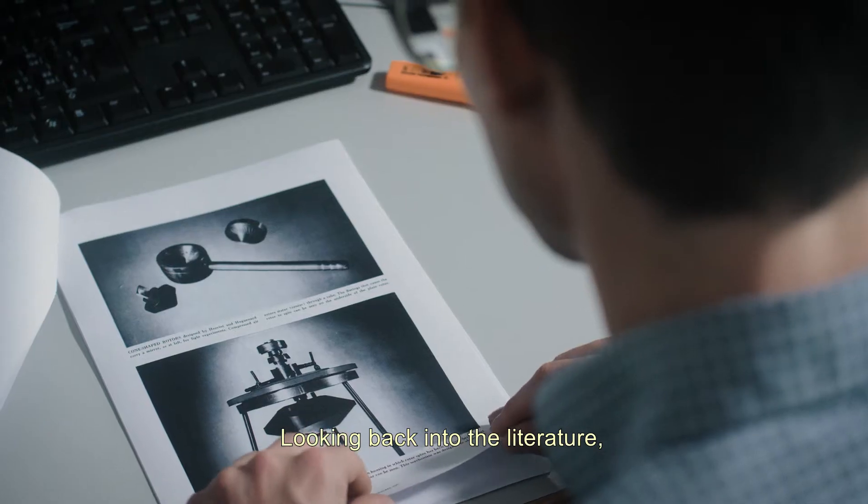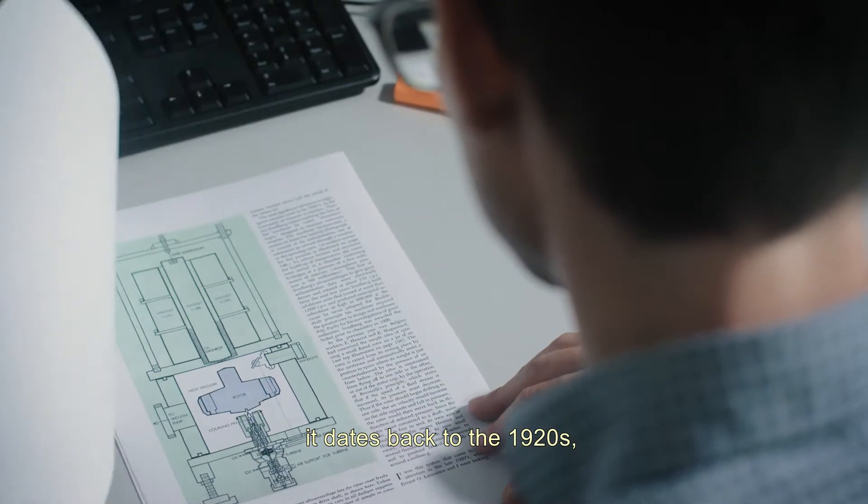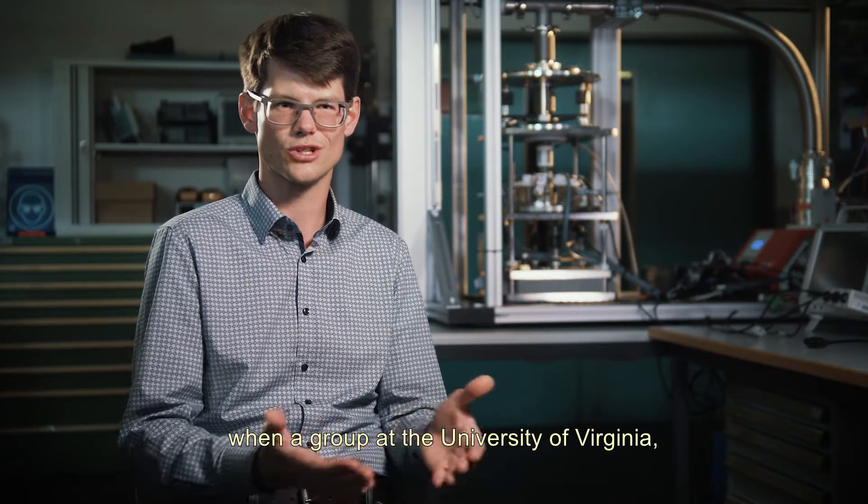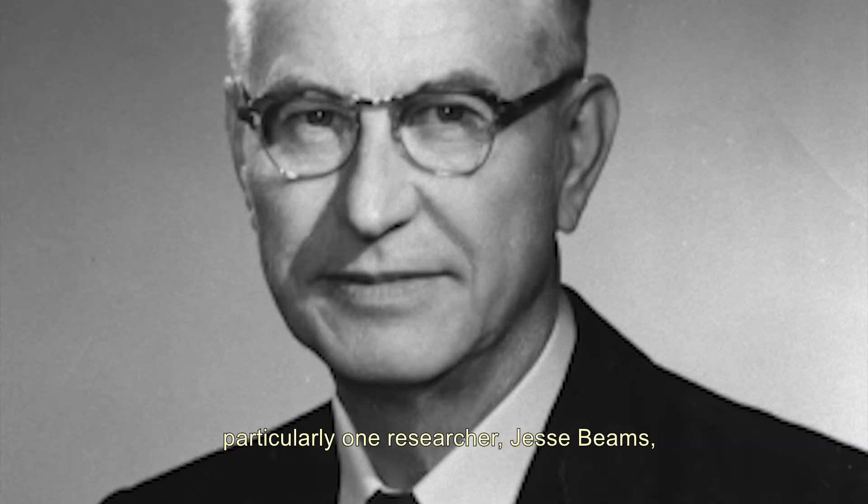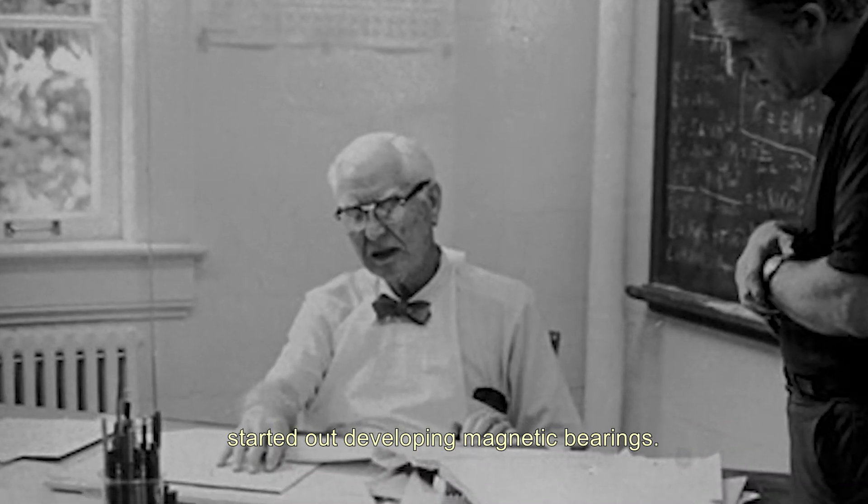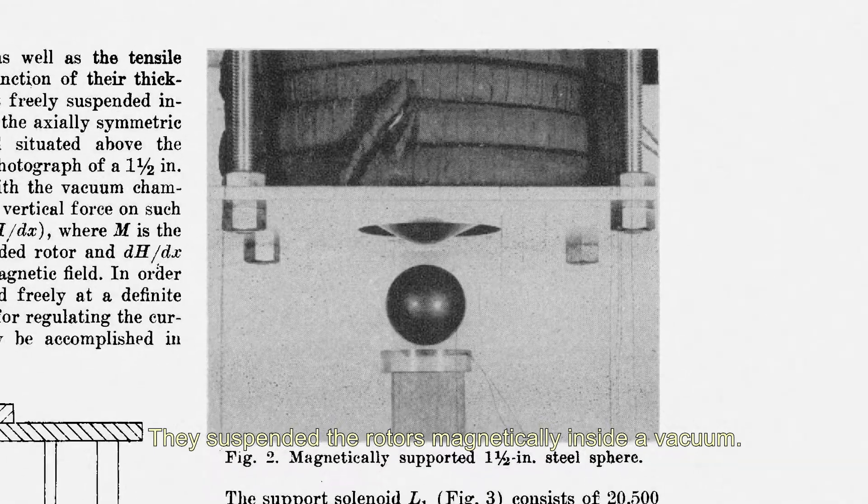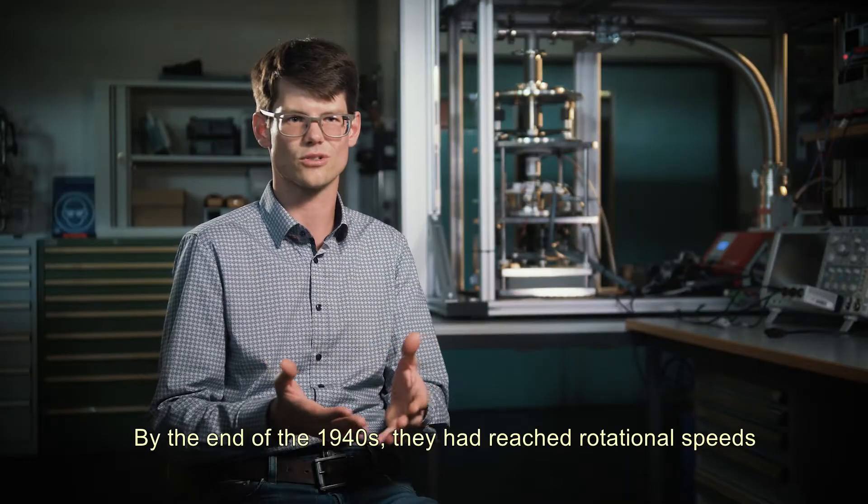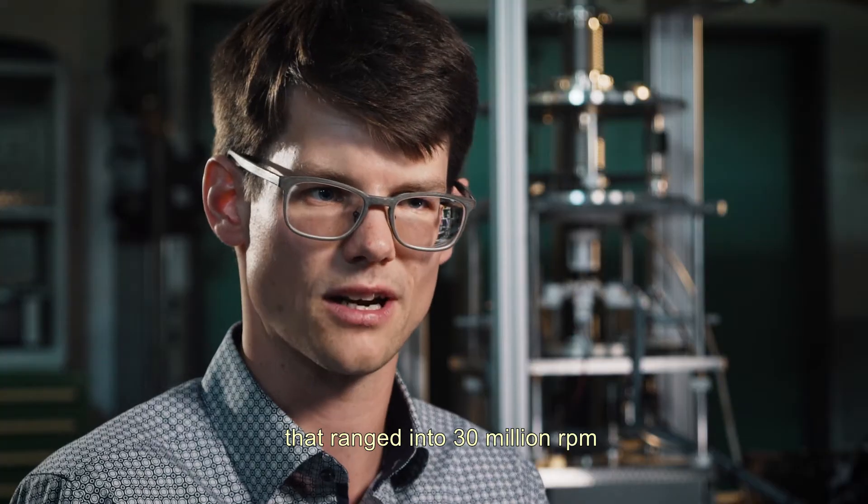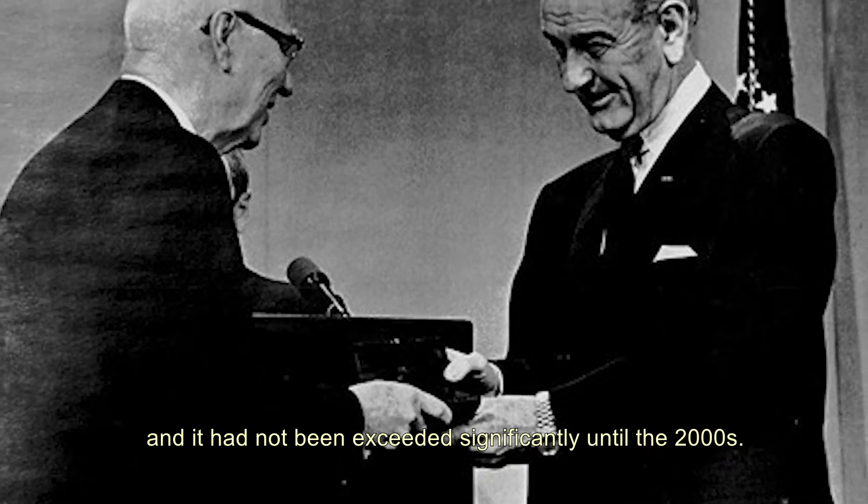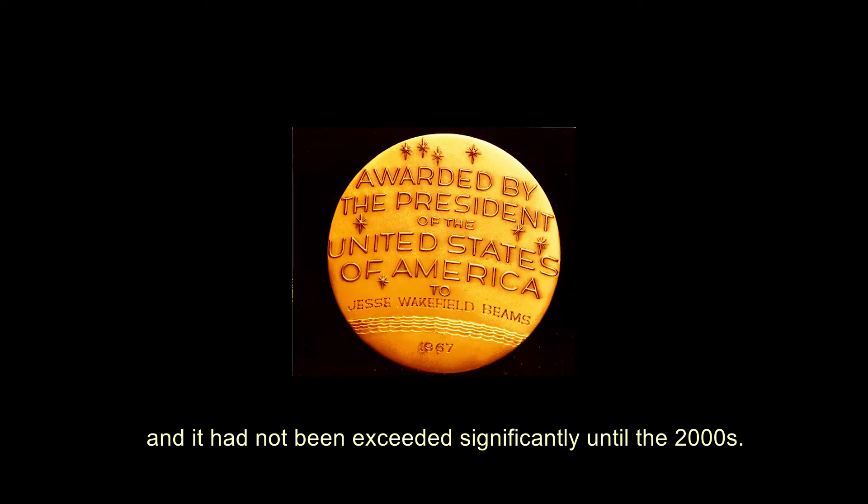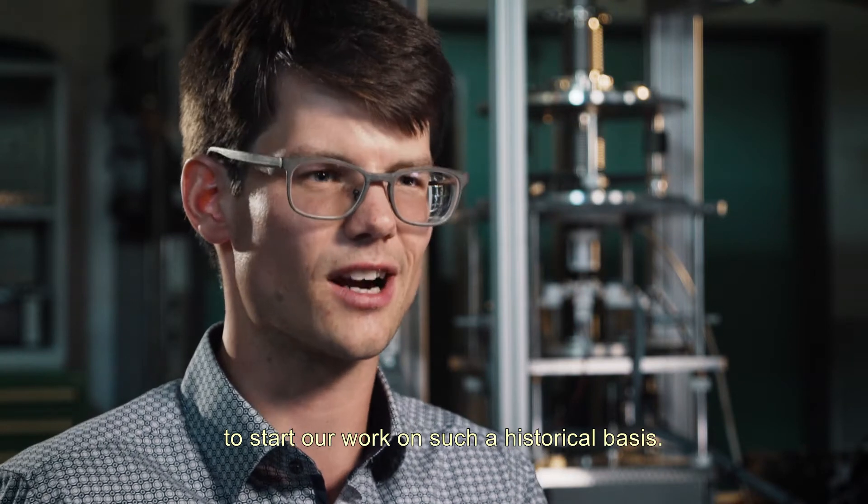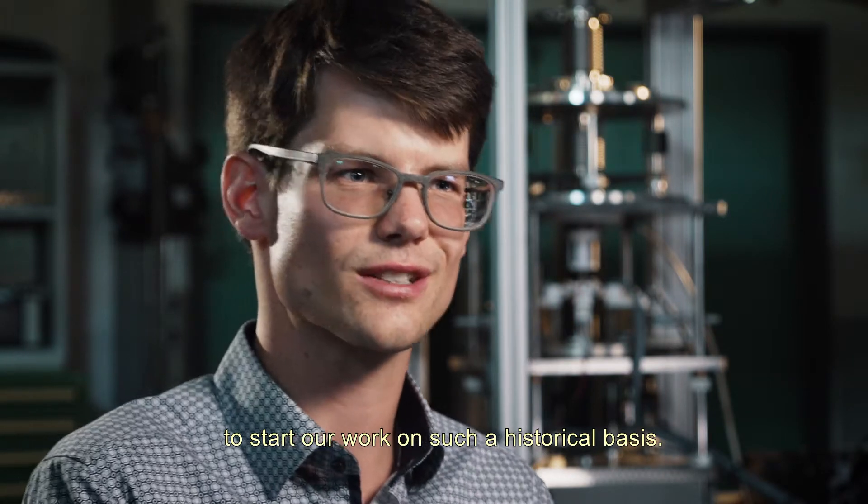Looking back into the literature, it dates back to the 1920s when a group at the University of Virginia, particularly one researcher, Jesse Beams, started out developing magnetic bearings. They suspended the rotors magnetically inside a vacuum. By the end of the 1940s they had reached rotational speeds that ranged into 30 million rpm. And it had not been exceeded significantly until the 2000s basically. So this made it very exciting for us to start our work on such a historical basis.